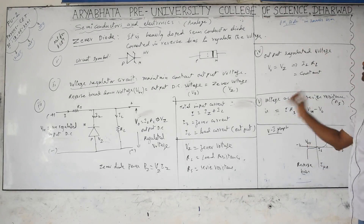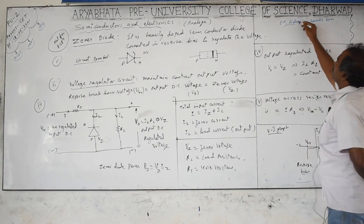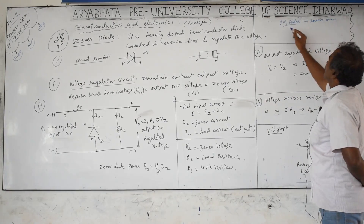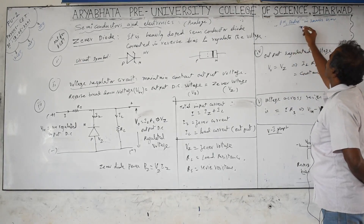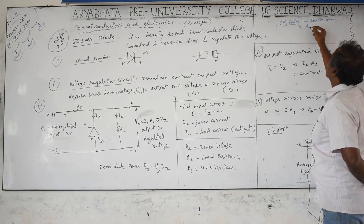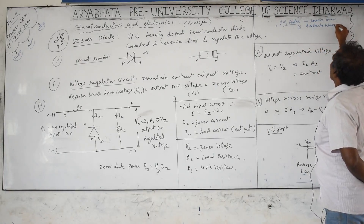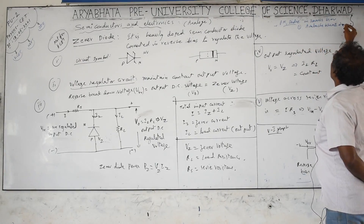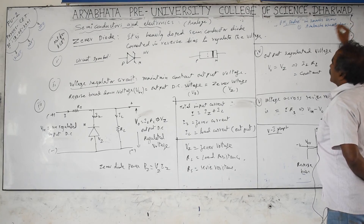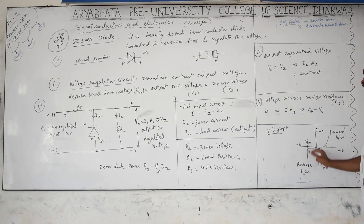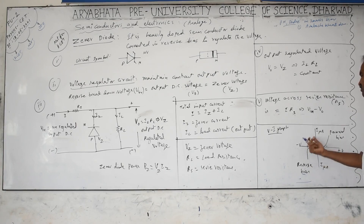In reverse bias, the few minority carriers keep increasing in number, reaching a maximum, and the current suddenly increases to a large value. Thereafter the current is no longer controlled by the voltage — the voltage across the diode remains constant, and that voltage is called the breakdown voltage.